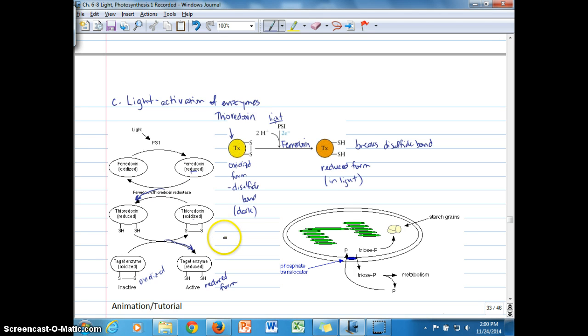Now the target enzymes that we're looking for here are the things that we've talked about in the Calvin cycle, like 3-phosphoglycerate kinase, and G3P dehydrogenase and phosphoribulose kinase. So these are the target enzymes referred to right here, these target enzymes. So when they are in their active form, they are reduced. They have a disulfide bond that forms when they're in an inactive form, which is oxidized. And again, this would be in the dark, and this would be the form in the light.